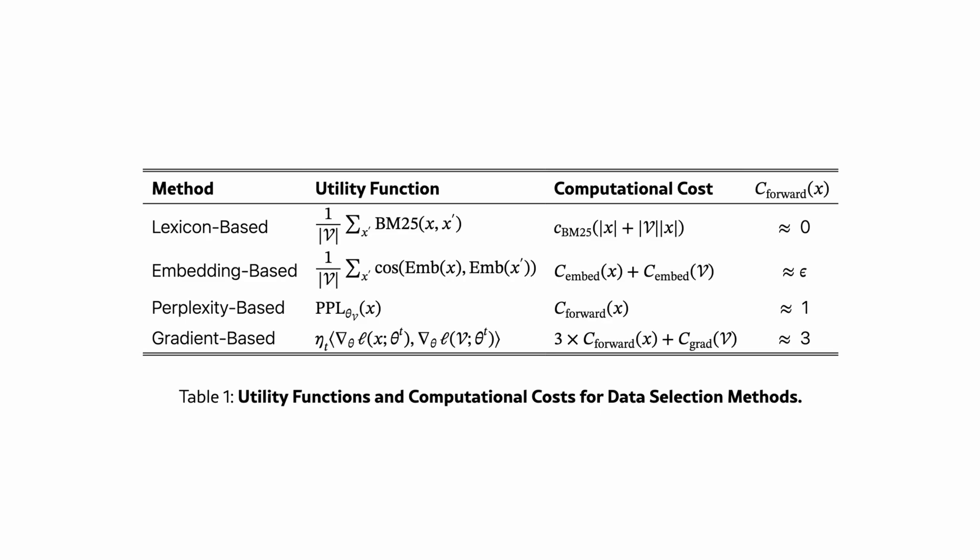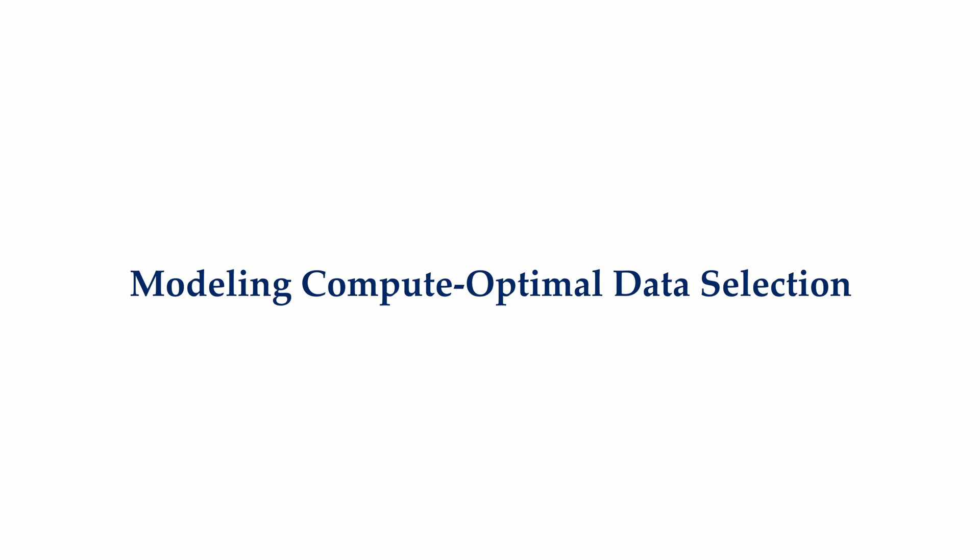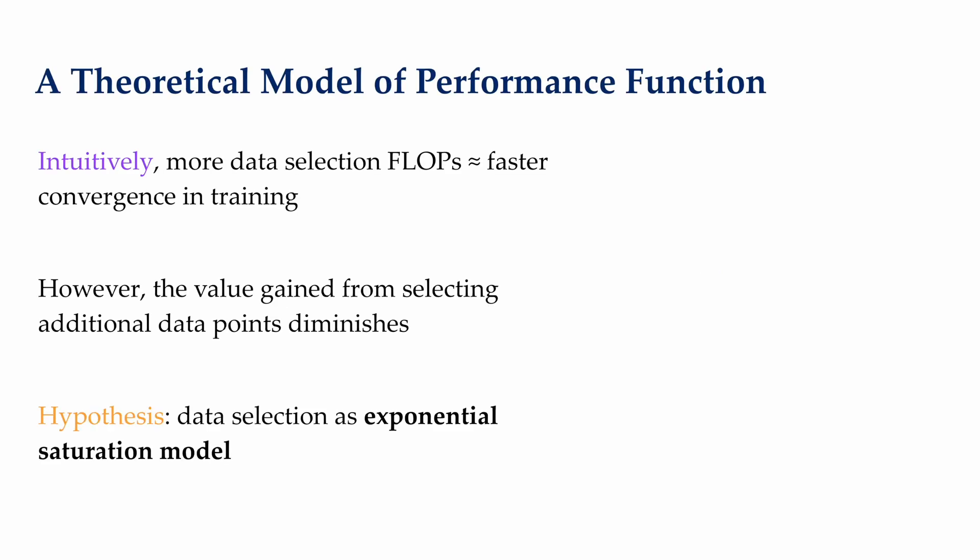Here's a summary of each of the methods' utility function and their respective computational cost. The key observation is that the efficacy of data selection directly scales with its compute spent.